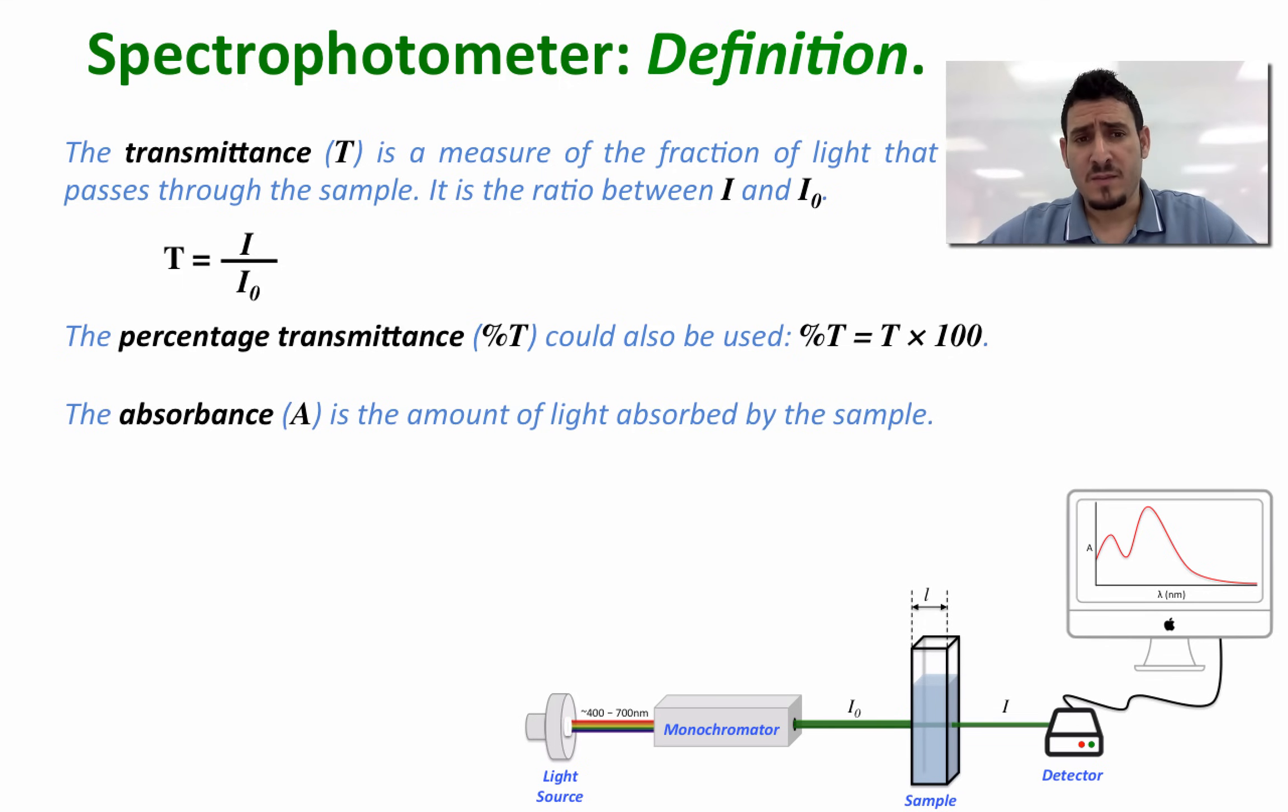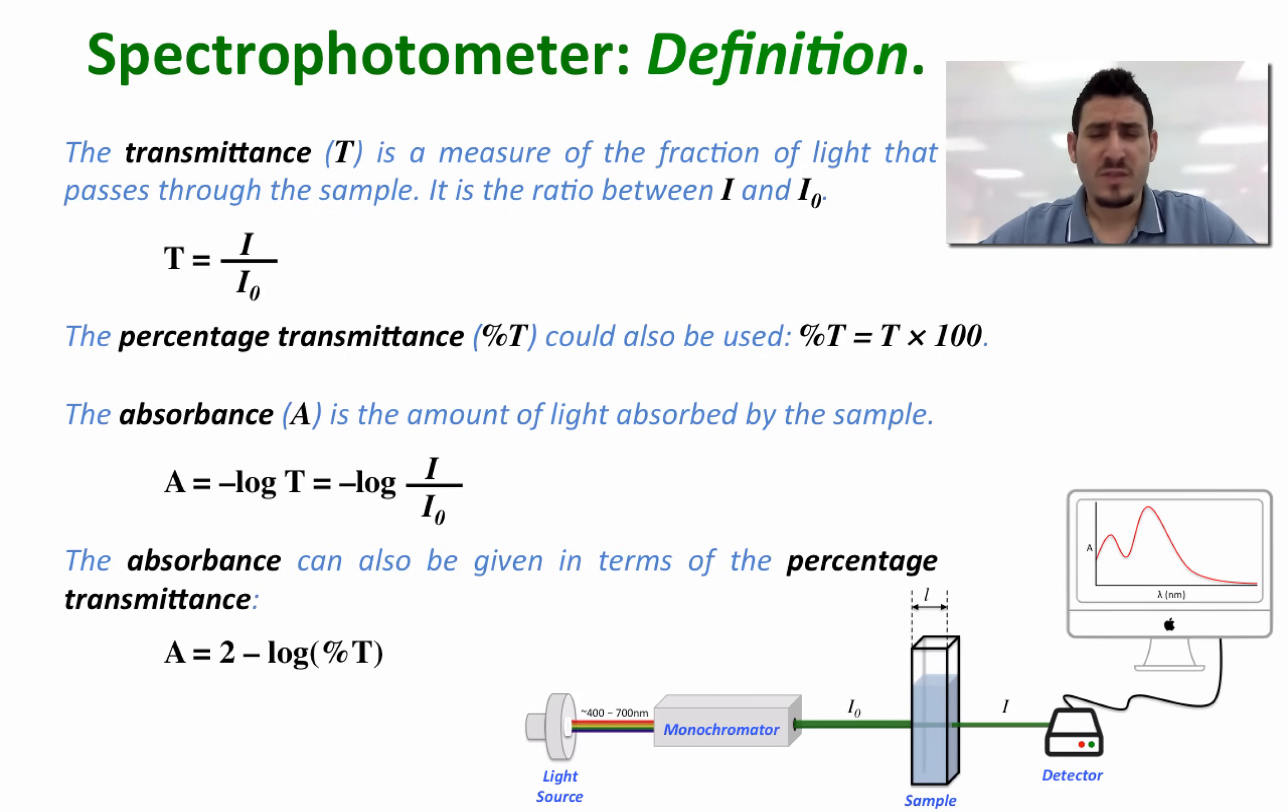The absorbance A is the amount of light absorbed by the sample. A is given by minus log base 10 of t, which means it's equal to minus log of i divided by i0. The absorbance can also be given in terms of the percentage transmittance: A equals 2 minus log percent t. We can obtain this expression by working out A equals minus log of t and t equals percent t divided by 100.